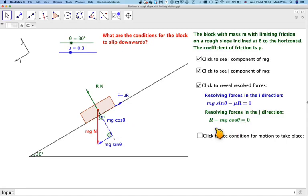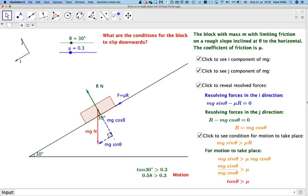Now we want to see what will be the conditions for motion to actually take place here. So from this one here, we're going to have r is equal to mg cos theta.